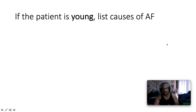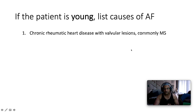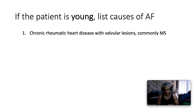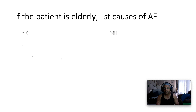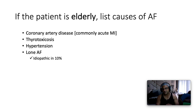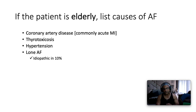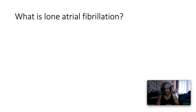If you have a young patient, the possible causes of atrial fibrillation include chronic rheumatic heart disease with valvular lesions, commonly mitral stenosis; thyrotoxicosis; atrial septal defect; acute pericarditis; myocarditis; and pneumonia. If your patient is elderly, the possibilities include coronary artery disease, commonly acute myocardial infarction; thyrotoxicosis; hypertension; and lone atrial fibrillation, which is idiopathic in 10% of cases.